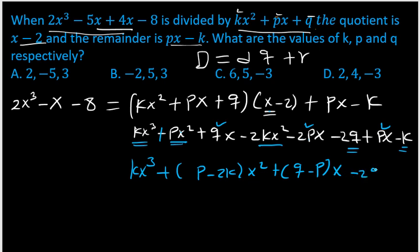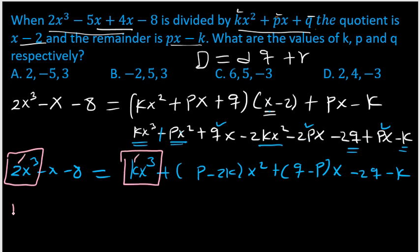This is the way to express it. So this equals 2x³ minus x minus 8. They are equal, so at this point try to observe the left hand and right hand side. The x³ term on the left side and the x³ term on the right side, the coefficient must be the same. That means 2 equals k, so k value equals 2.